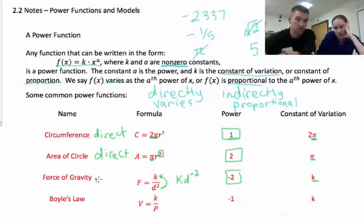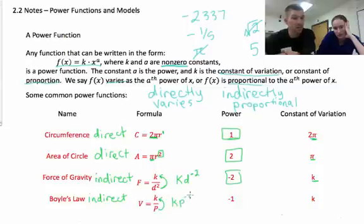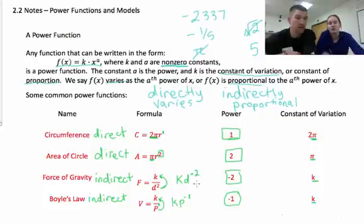Boyle's law also strongly resembles the force of gravity. So it also would be indirect. And just like with the force of gravity, we had to investigate what was going on with d squared. We're going to do the same thing with p. We've got to move it from the denominator to the numerator, so we have the same shape. And when you do, that exponent of 1 becomes a negative. Right. Because it's normally a p to the first power on the bottom. We're moving it to the top, so that's p to the negative 1. Which gives us a power of negative 1 and a constant of variation of k.